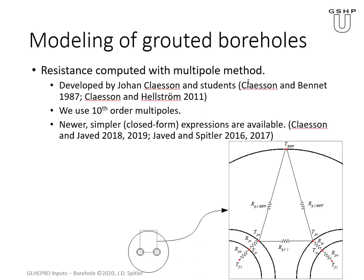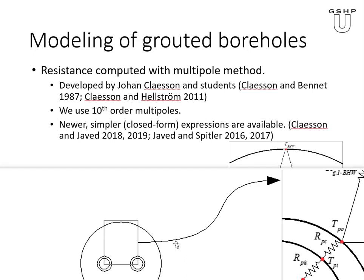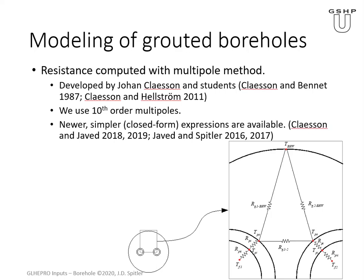For grouted boreholes, the resistance is quite complex since you have these non-coaxial tubes inside a round borehole — it's a rather complex conduction problem. We use a method developed by Johan Claussen, a professor at the University of Lund, and his students. The original method was developed in the 1980s. You can compute with a computer program what's known as an order of a multipole. We use a 10th-order multipole, which is numerically very accurate.